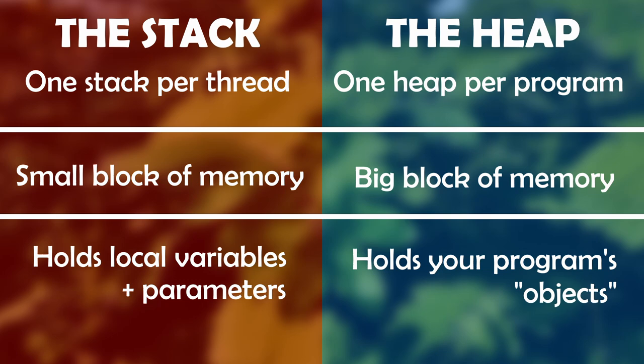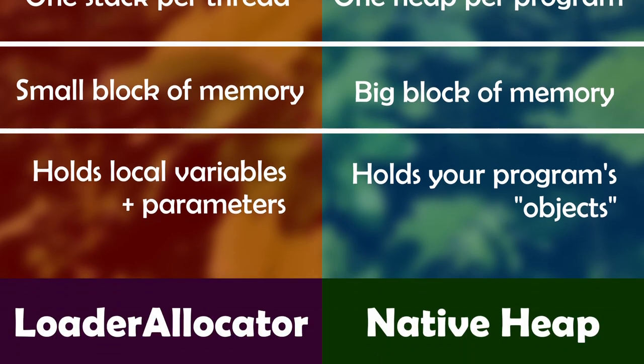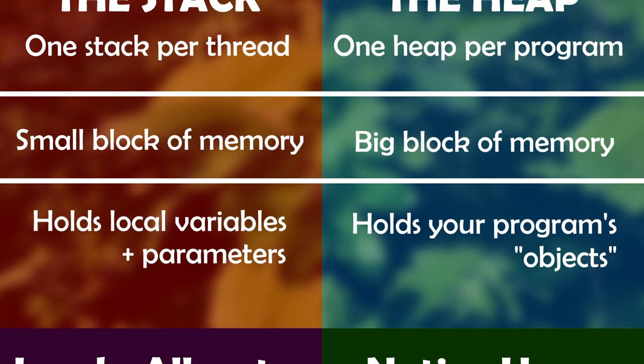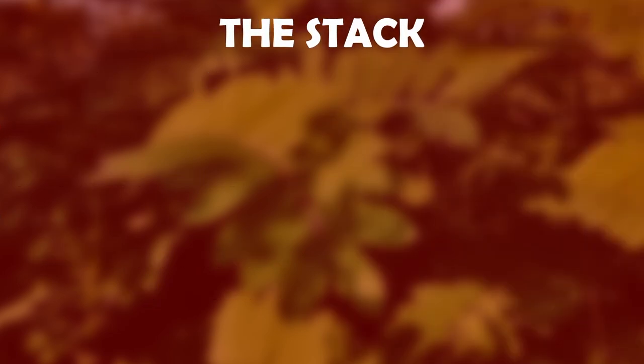There are other regions of memory too — there's a native heap for C++ code, there's the loader allocator regions and a few other things — but to be honest, we don't care. It's really not important to our code directly and its performance. We keep it to stack and heap here. So let's look at these a little closer and get a little familiar with them.